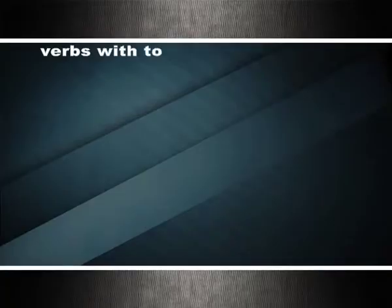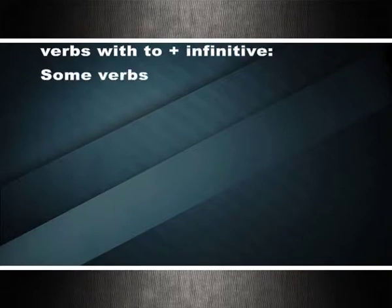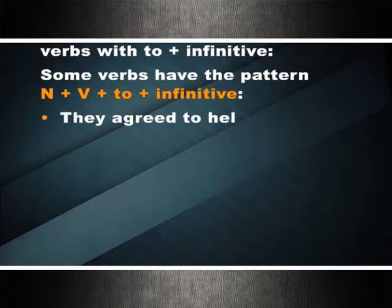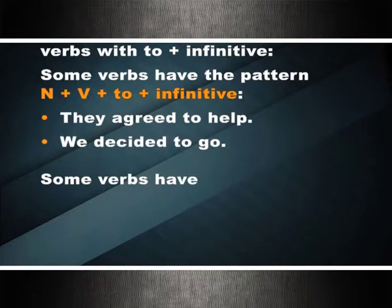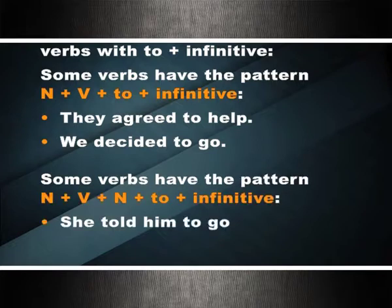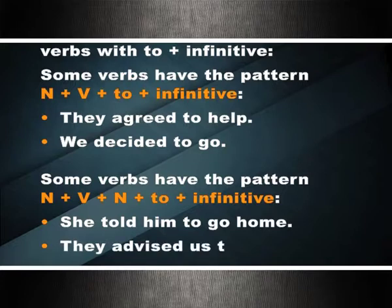Verbs with 'to' plus infinitive: some verbs have the pattern N + V + to + infinitive — they agreed to help; we decided to go. Some verbs have the pattern N + V + N + to + infinitive — she told him to go home; they advised us to wait.